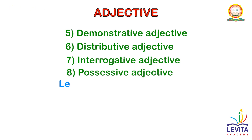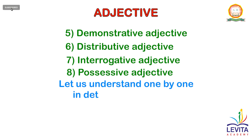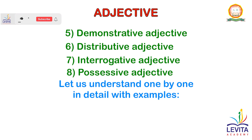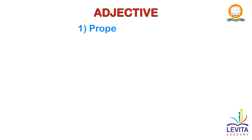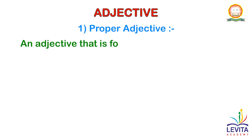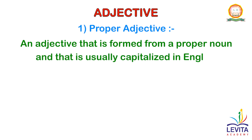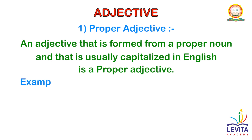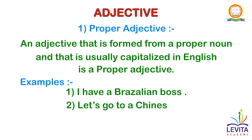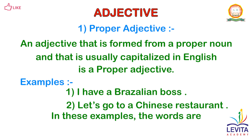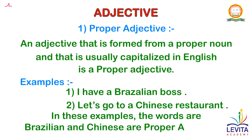Let us now understand one by one in detail with examples. An adjective that is formed from a proper noun and that is usually capitalized in the English language is a proper adjective. In these examples, the words Brazilian and Chinese are proper adjectives.